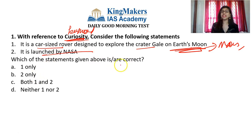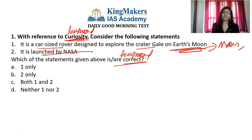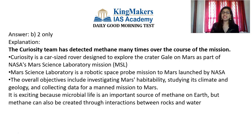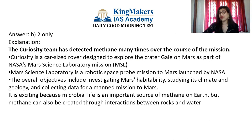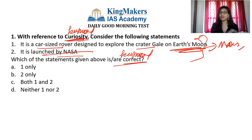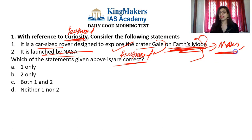You need to identify the correct statement. The keyword is whether it's a 'correct' or 'incorrect' statement — be very careful. The answer is option B: only statement two is correct — it is launched by NASA. Statement one is wrong because Curiosity explores the crater Gale of Mars, not Earth's Moon. The word 'Earth's Moon' is the wrong keyword. Everything else in statement one is correct, but because of that keyword, it is wrong.